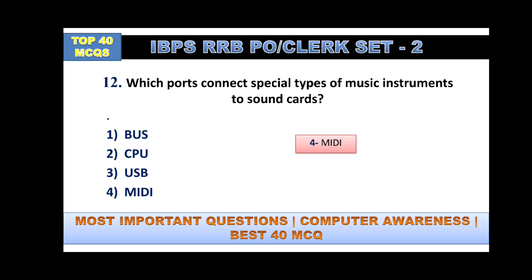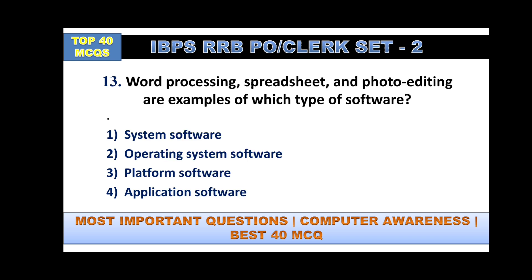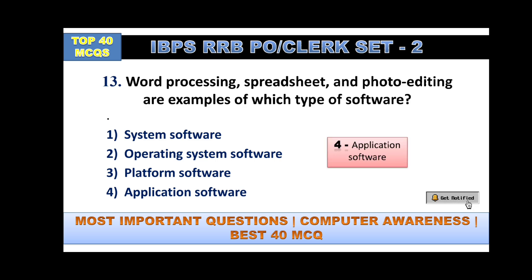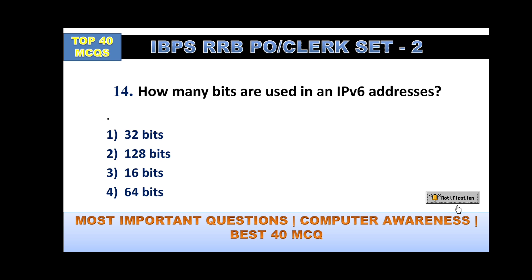USB means Universal Serial Bus and CPU means Central Processing Unit. Word processing, spreadsheet, and photo editing are examples of which type of software — system software, operating system software, platform software, or application? Answer is application software; all three examples are application software.